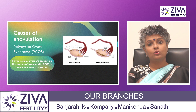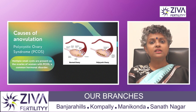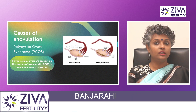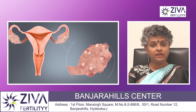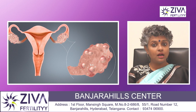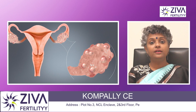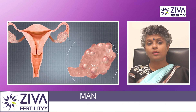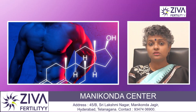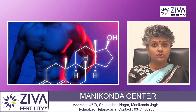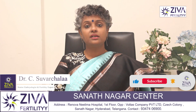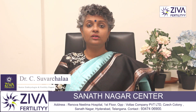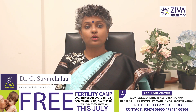Polycystic ovary syndrome, or PCOS, is a common hormonal disorder characterized by enlarged ovaries containing multiple small cysts. It often leads to hormonal imbalances — specifically high levels of androgens, which are male hormones, and insulin resistance. These imbalances can disrupt the regular ovulation process.